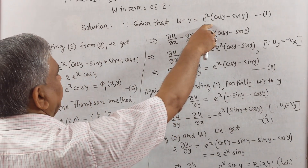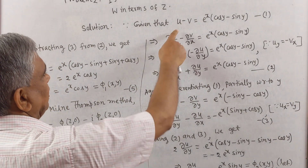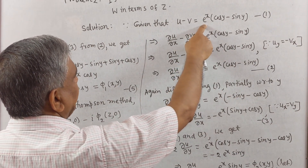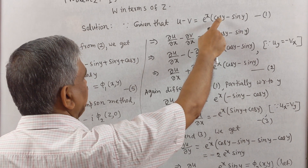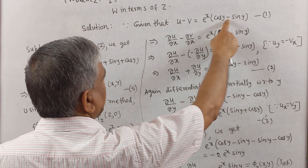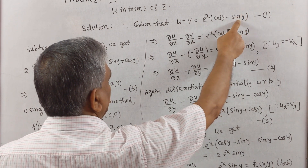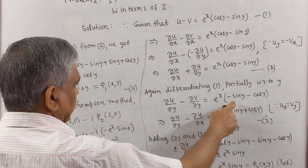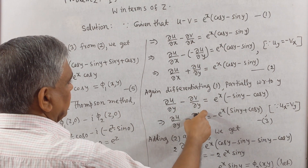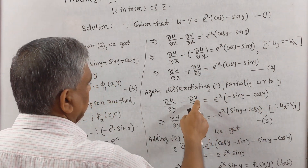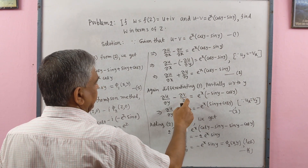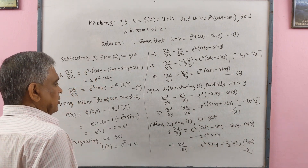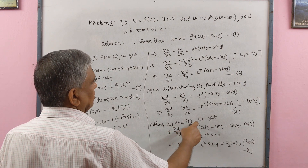Again differentiating equation 1 partially with respect to y: ∂u/∂y − ∂v/∂y = eˣ(−sin y − cos y). Since by Cauchy-Riemann u_x = v_y, we replace ∂v/∂y with ∂u/∂x. This gives equation number 3: ∂u/∂y − ∂u/∂x = eˣ(−sin y − cos y).